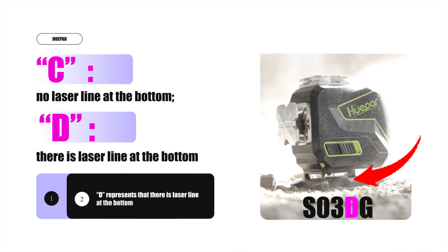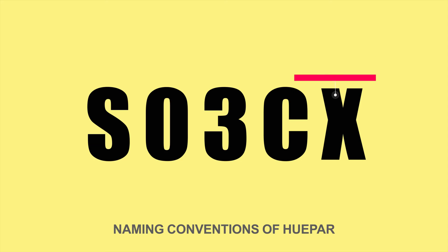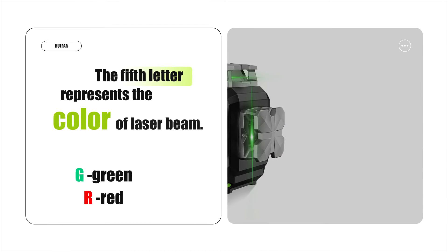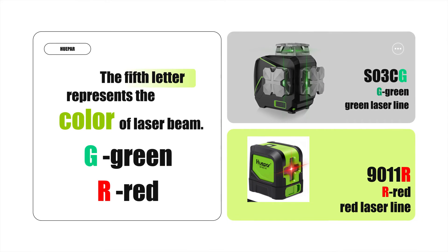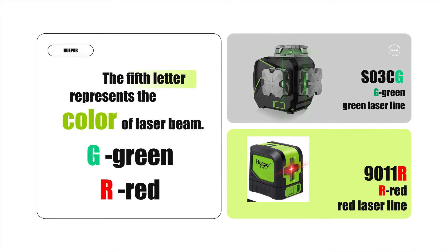The fifth letter represents the color of laser beam. For example, SO3CG, G green, green laser line. 9011R, R red, red laser line.